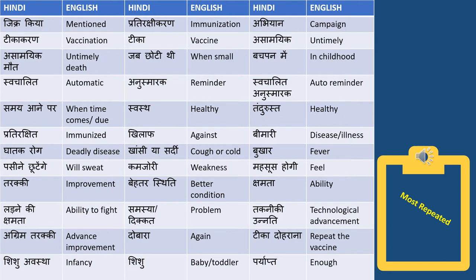'Samayi ane par' means when the time comes, or when it is due. 'Tandurust' means healthy — for example, 'meri beti tandurust hai.' Some parents will argue with the health officer. 'Pratirakshit' means immunized, and 'pratirakshikaran' is immunization. 'Khilaaf' means against. 'Bimari' means disease or illness — sickness can also be called bimari.